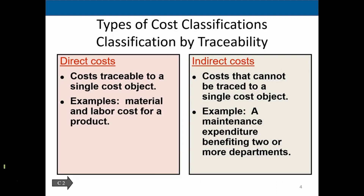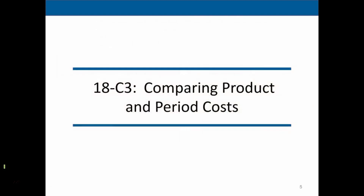Types of cost classifications by traceability. Direct costs are traceable to a single cost object — such as materials and labor. The most direct costs in making a hamburger are generally the materials used in the burger and the labor involved in creating it. Indirect costs, however, are costs that cannot be traced to a single cost object. For example, the maintenance department — if it services both the executive side and the manufacturing side of the office, we have to determine how to allocate that cost. When we can't tie a cost directly to a specific process, it will be indirect and we'll have to find some way to apply it.